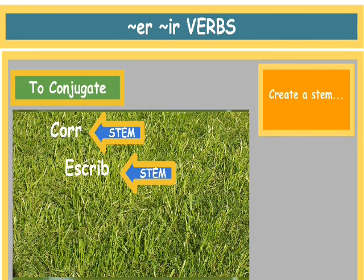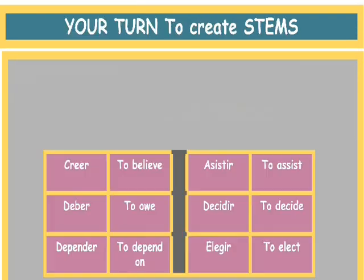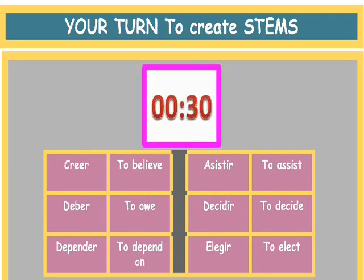So let's practice. We have three ER and three IR verbs that you will create a stem out of. Are you ready? You have 30 seconds. Let's go. And done.